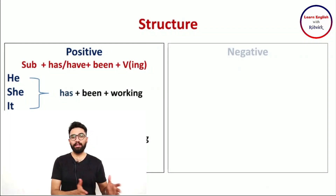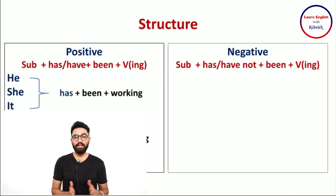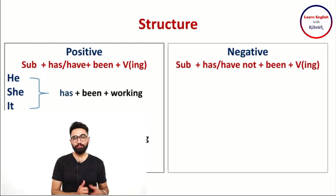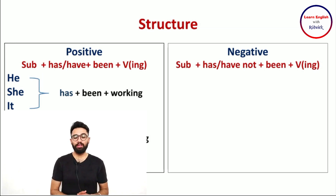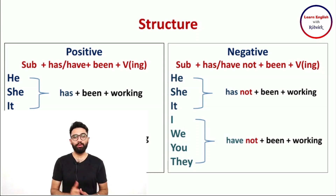Moving on to the negative category, we simply have to add not. So the structure would be: subject plus has or have not been plus the -ing form of the verb. I have mentioned a list with the pronouns — you can pause this video and take a screenshot for your reference.